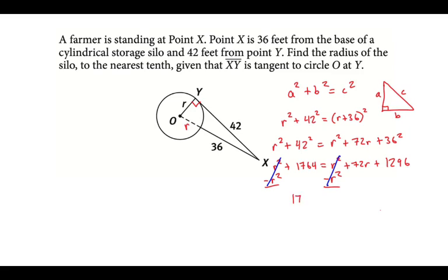So we have 1,764 equal to 72r plus 1,296. So we need to subtract 1,296 from both sides. And we get 468 equal to 72r. And now all we have to do is divide by 72 on both sides, and we have our final answer.